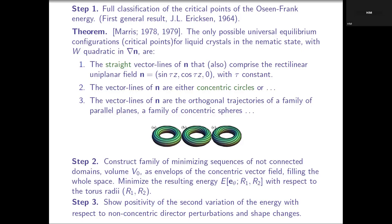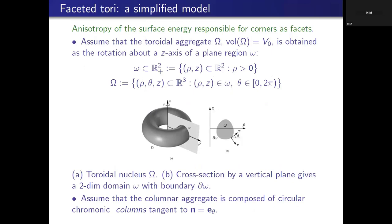Anisotropy — lacking in the previous model — is really responsible for corners and facets. We get a very simplified model by assuming that the toroidal aggregate of volume V₀ is obtained as a rotation about the z-axis of a region in the plane. This little omega region is rotated about the z-axis to form the three-dimensional domain. It is not necessary that omega is a circle — it could have any other shape.